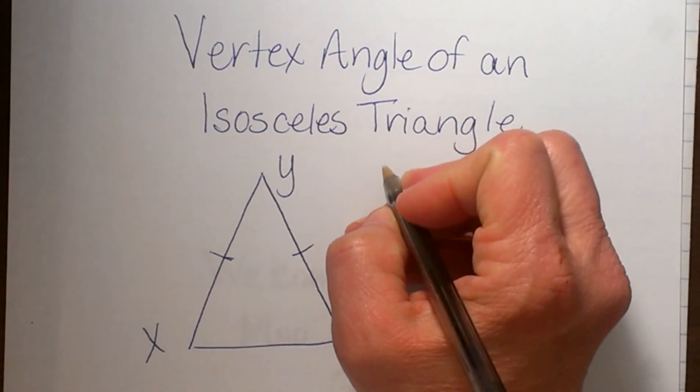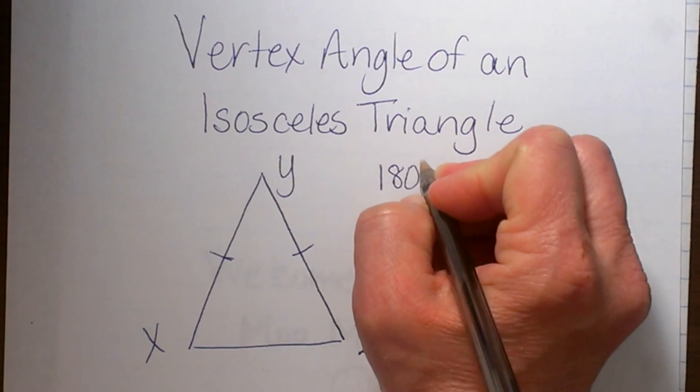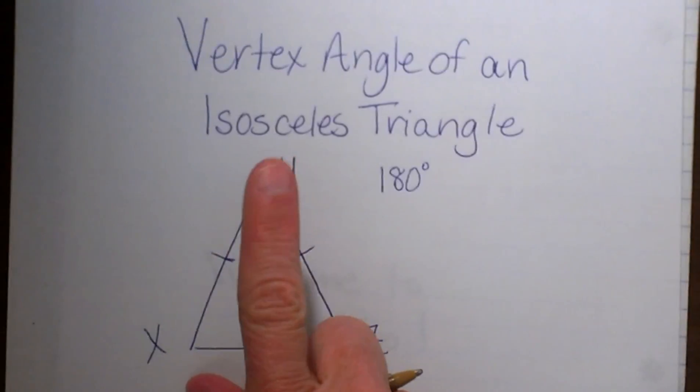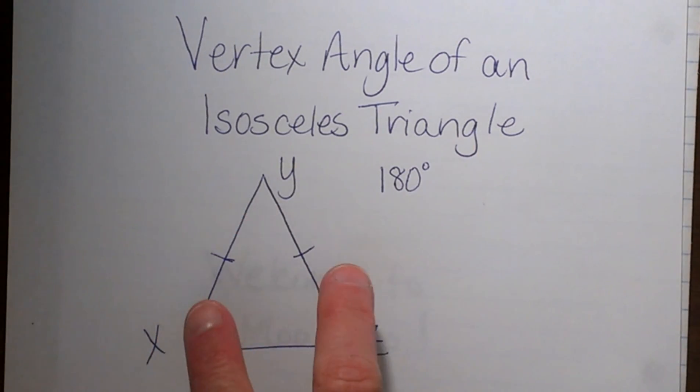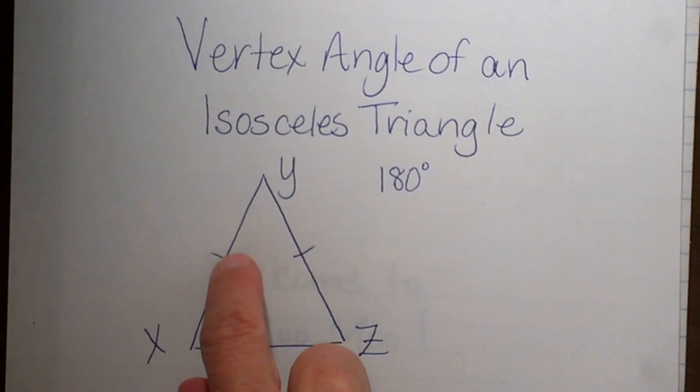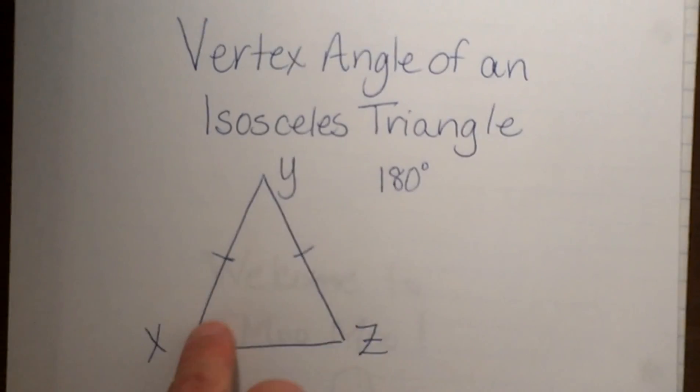We know that a triangle's measure adds up to 180 degrees. So if we know that vertex angle, we can actually figure out the other two angles because these two base angles x and z are going to be congruent to each other because they are opposite congruent sides.